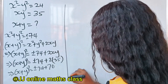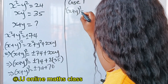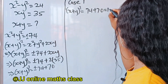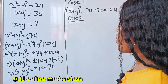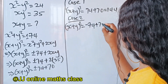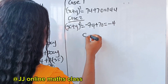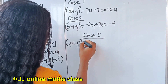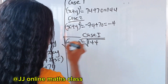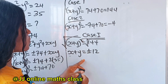Case one: x plus y squared equals positive 74 plus 70, which equals 144. Taking the square root of both sides, x plus y equals plus or minus square root of 144, which is plus or minus 12.